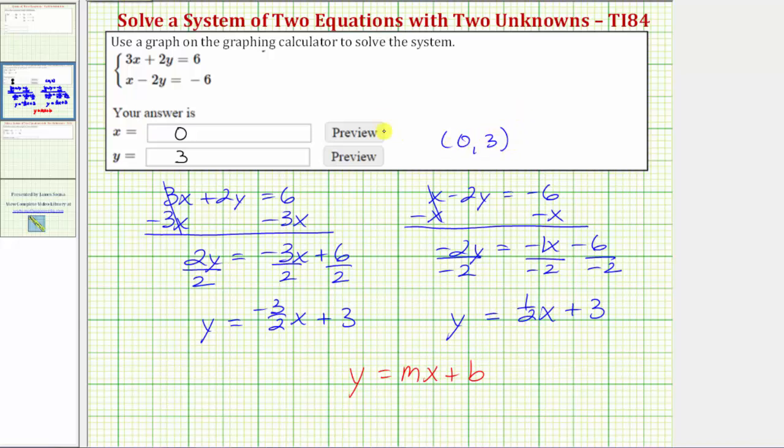As an ordered pair, if the variables are x and y, the first value is always x, the second value is always y. Before we go though, let's algebraically verify that this ordered pair does satisfy both equations.